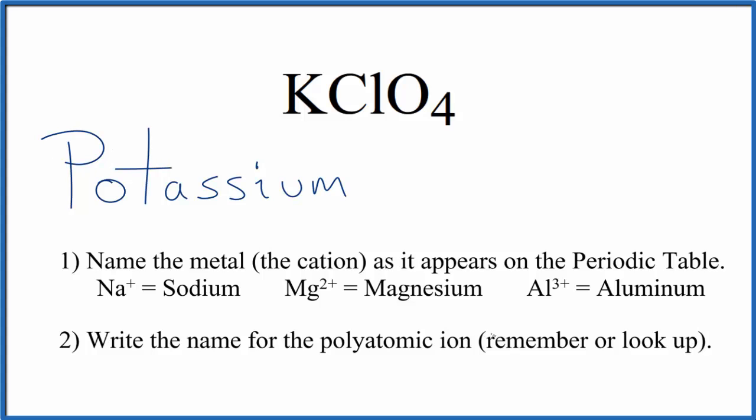Next, we're going to write the name for the polyatomic ion, so this ClO4 here, this is called the perchlorate ion, and you either memorize that, or if you're allowed, you look it up on a table of polyatomic ions. So we write perchlorate, lowercase p, and the name for KClO4 is potassium perchlorate.